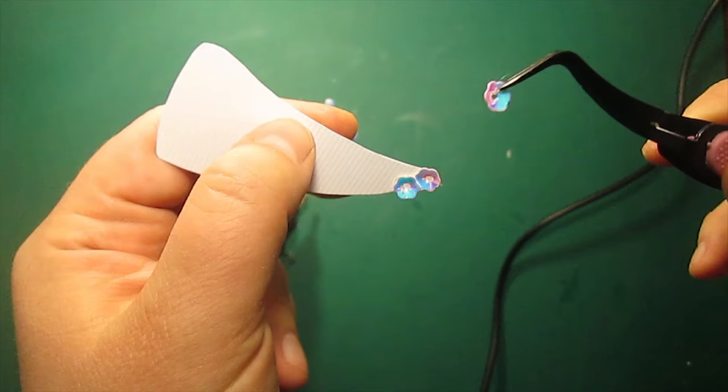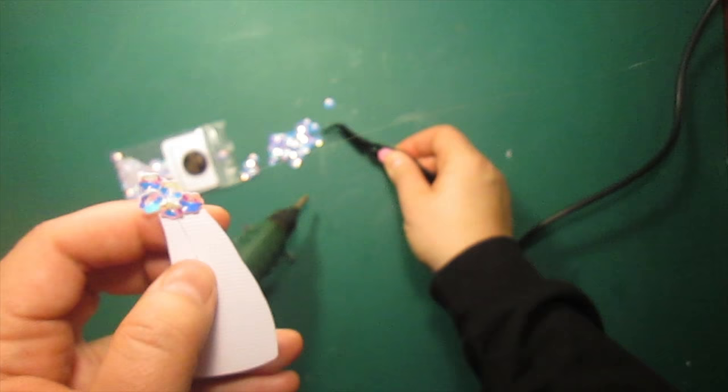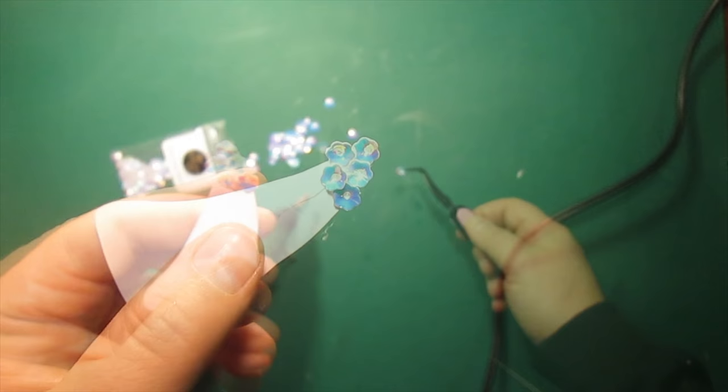The hot glue dries instantly and is very strong, so it really helps to save tons of time here. It also allows to overlap the flowers when I need to. So I keep attaching flowers, making sure I cover up all the edges of cardstock and no white is showing through.